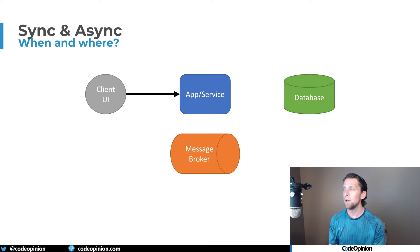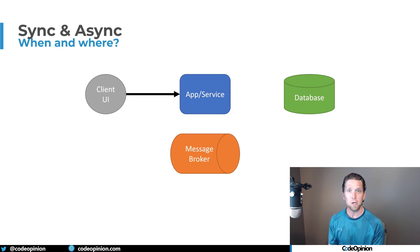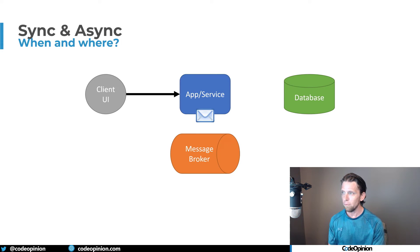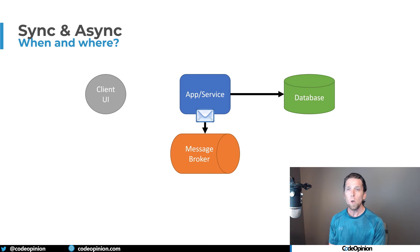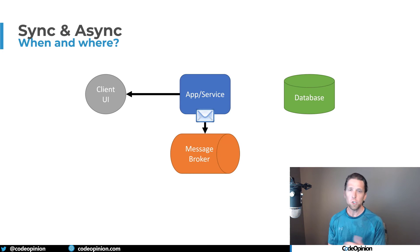The question often is: how do you let the client know something has been processed asynchronously after the fact? You can do that. The client UI makes a synchronous HTTP call, and instead of processing immediately, we create a message representing the request, put it to the message broker, tell the client we're good, then process it completely asynchronously. Once finished, we can push a notification — something like SignalR with WebSockets — to tell the client that processing is complete.